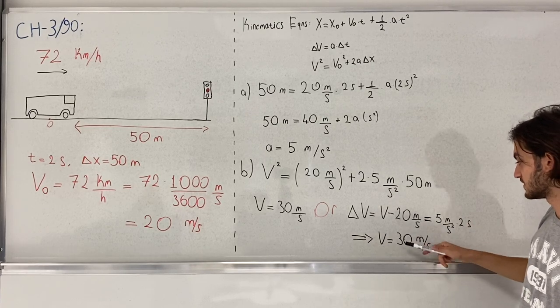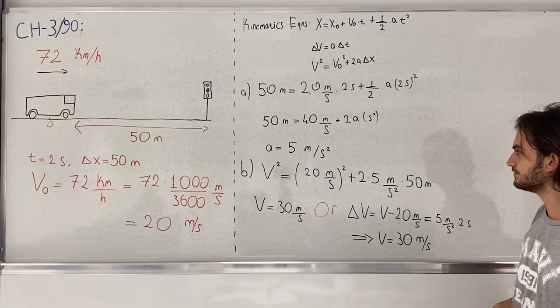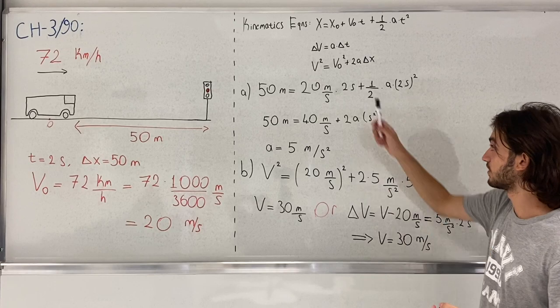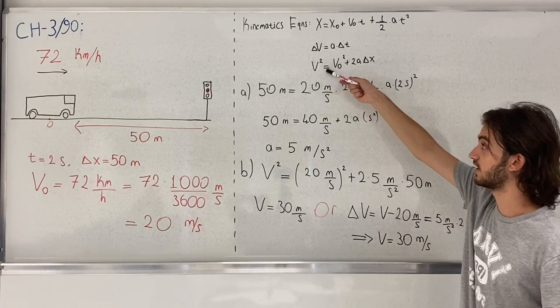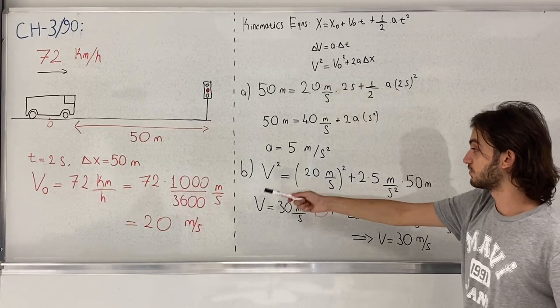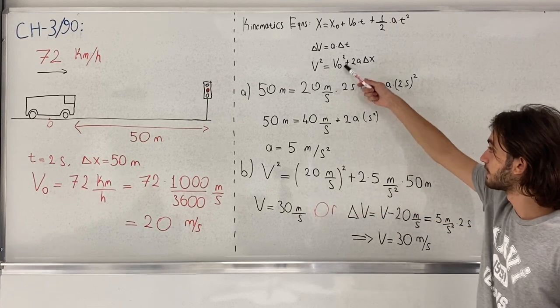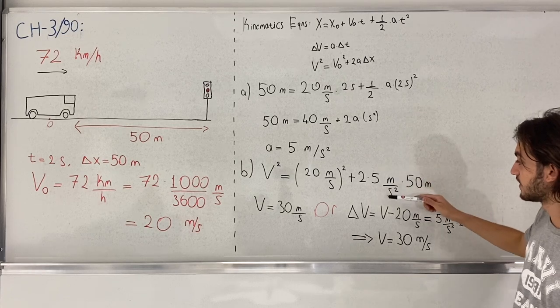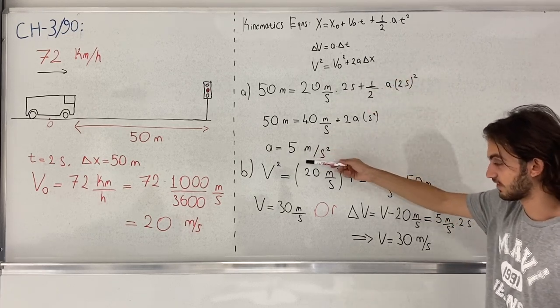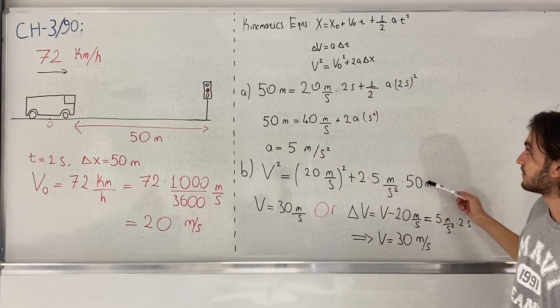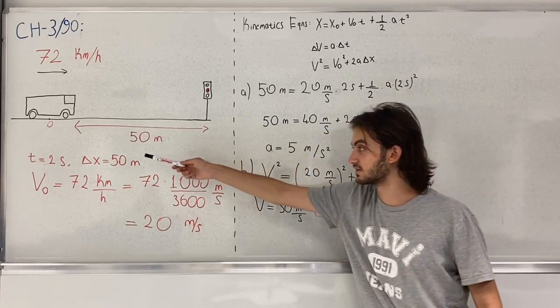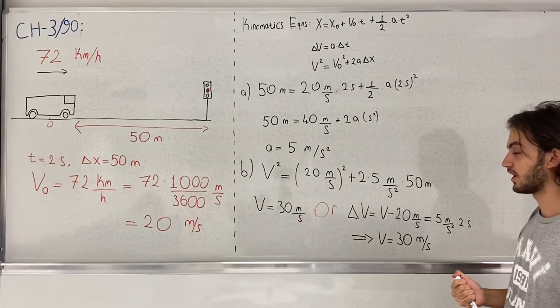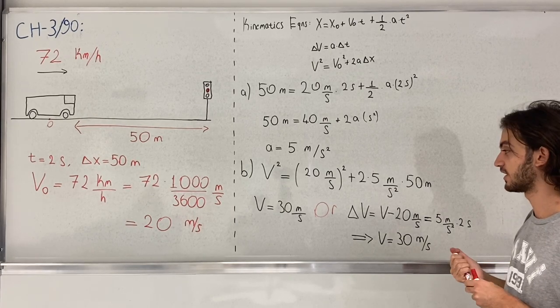You can also use this equation for the final velocity. We have V squared equals the initial velocity squared plus two times 5, because we have acceleration, times 50 meters, because the distance covered is 50 meters. Either way you end up with the final velocity of 30 meters per second.